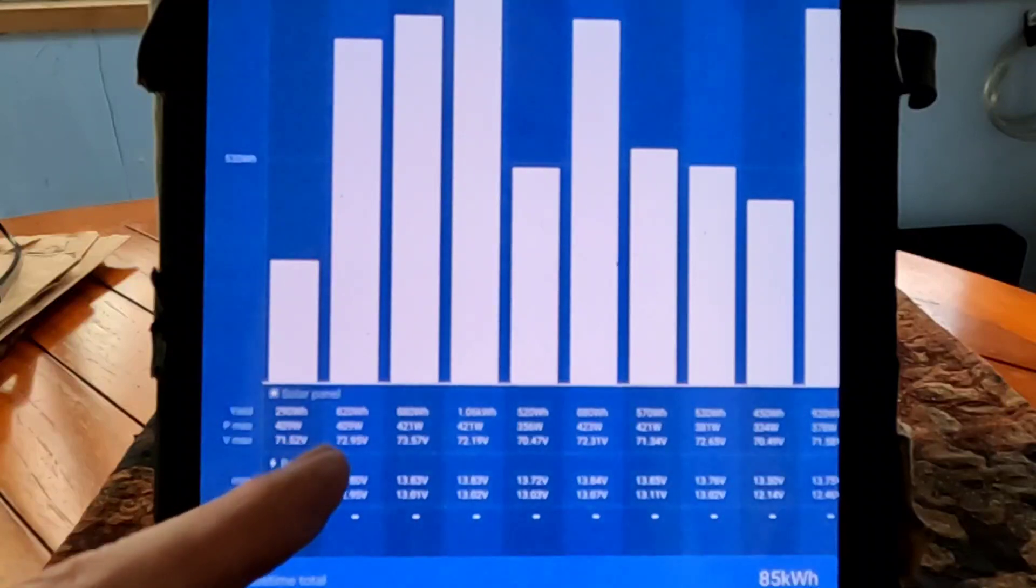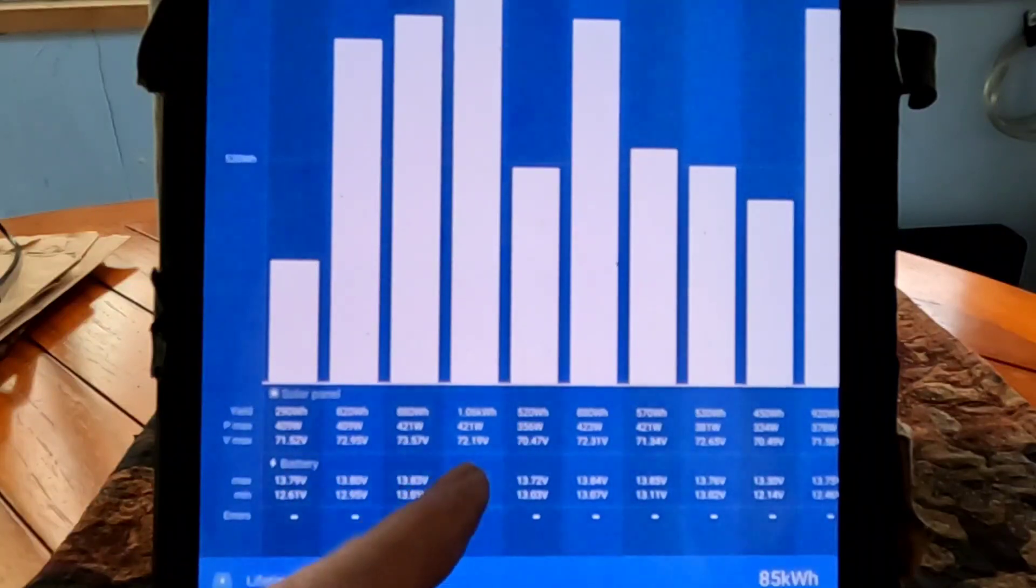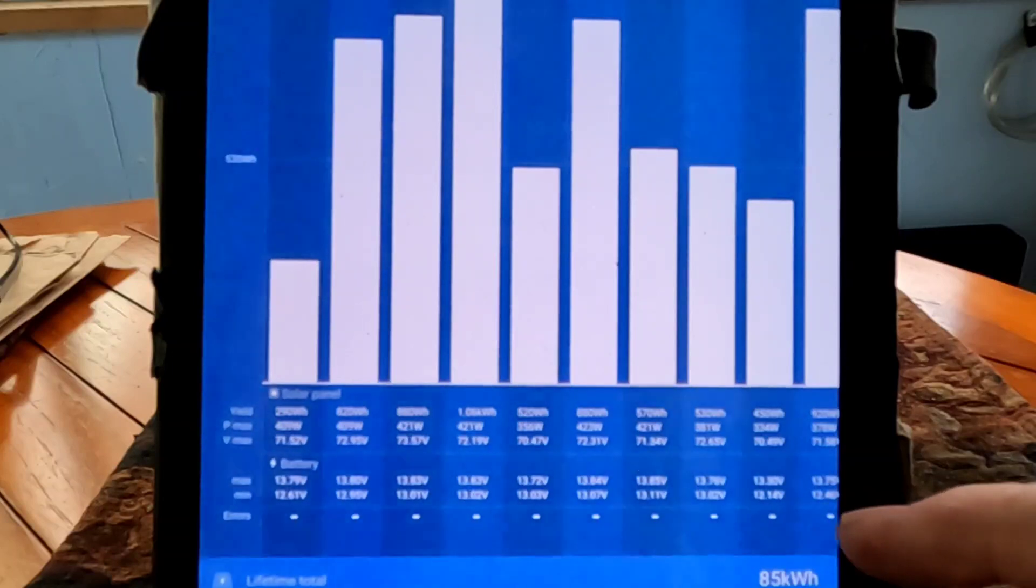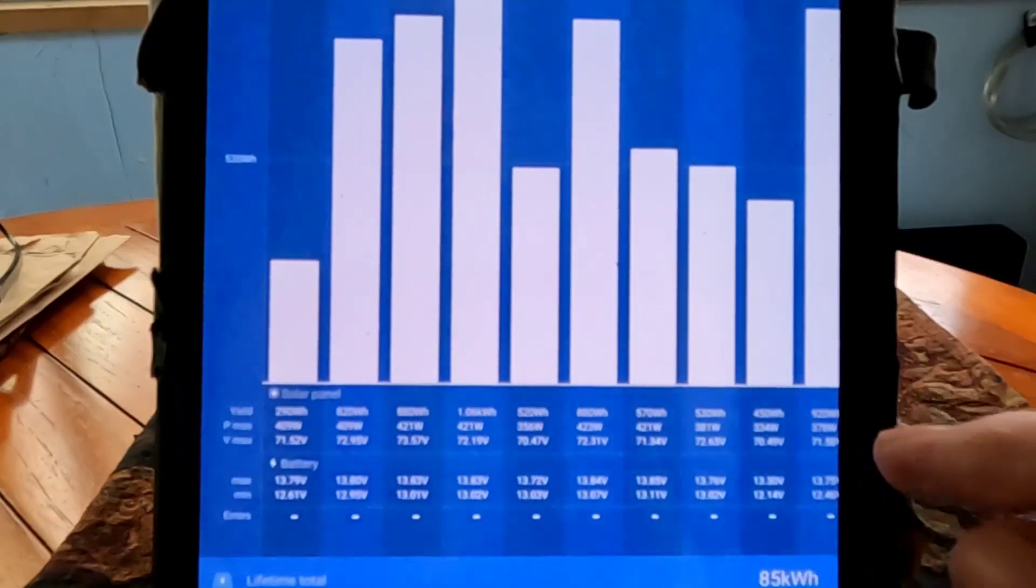So I have to say that the nine bus bar is out producing to some degree these five bus bar per cells. I'm still very happy with both of them, but I wanted to try that nine bus bar per cell array and panels just to see how big of a difference there was, and there is a difference.